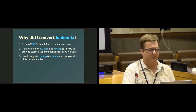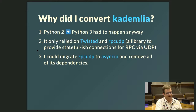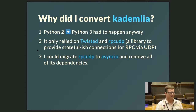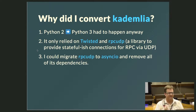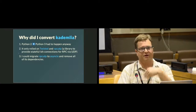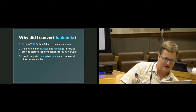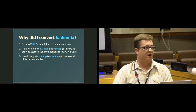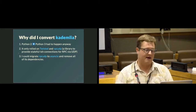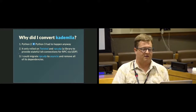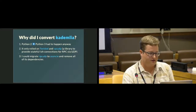Why did I convert Kademlia — the distributed hash table I wrote? I wanted to convert to Python 3 anyway. It only relied on Twisted and another library I wrote called RPC UDP, which provides a stateful-ish connection for RPC — remote procedure calls over UDP instead of TCP, so the amount of network traffic is much lower but your latency is much higher. That's great if you don't know if another machine is up and you have to talk to lots of them at once, like the distributed hash table. I knew I could migrate RPC UDP to asyncIO and remove all of its dependencies.